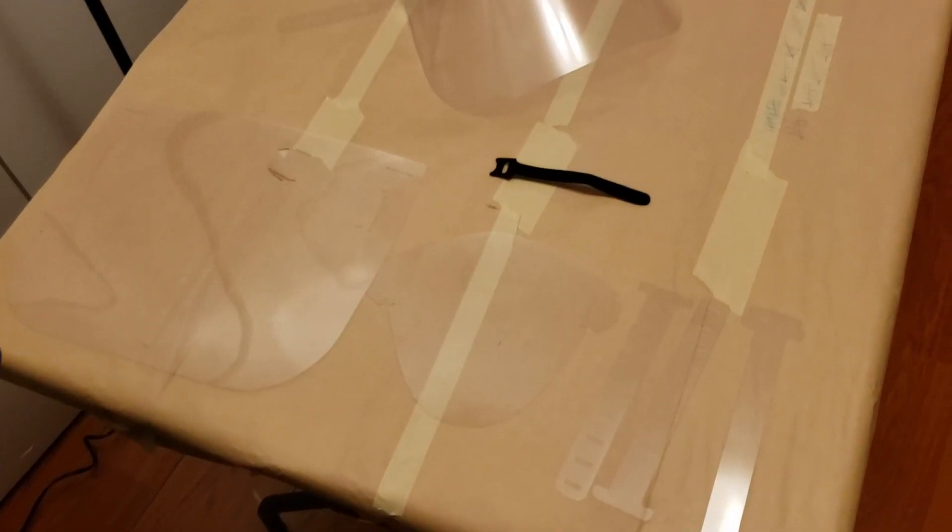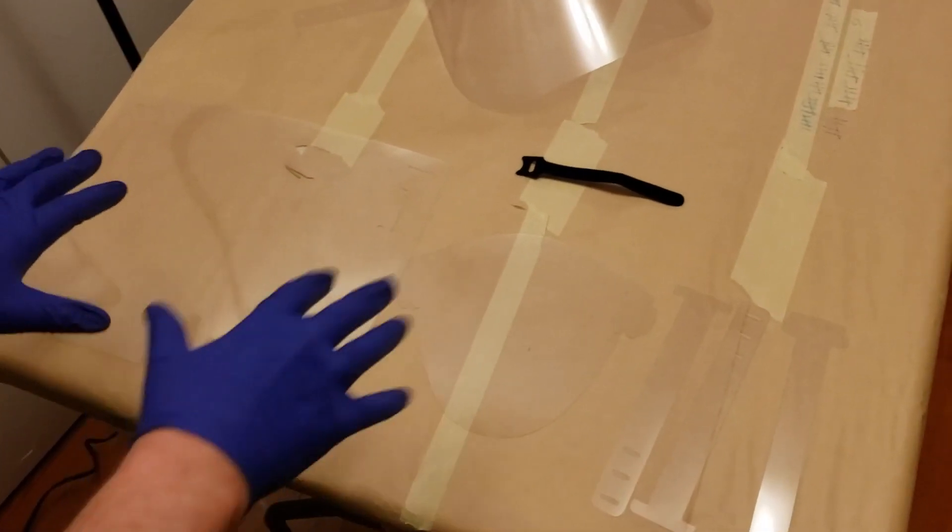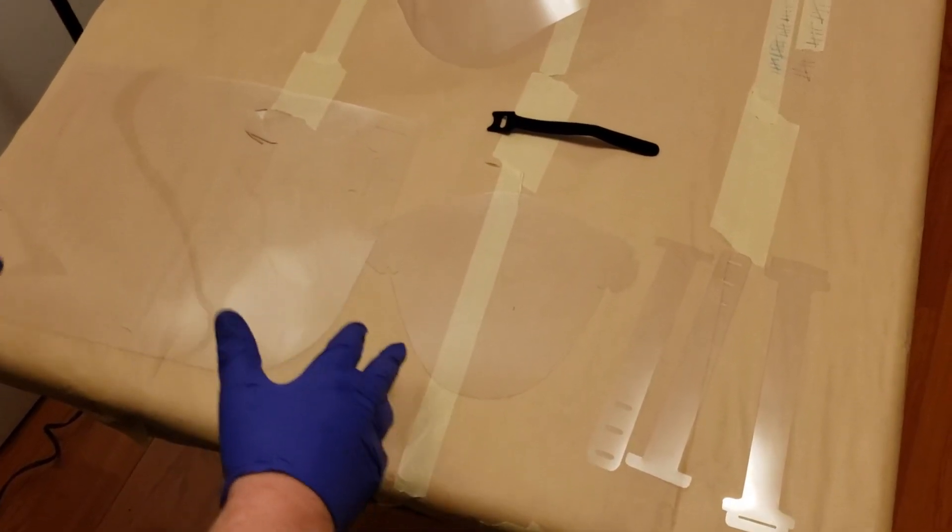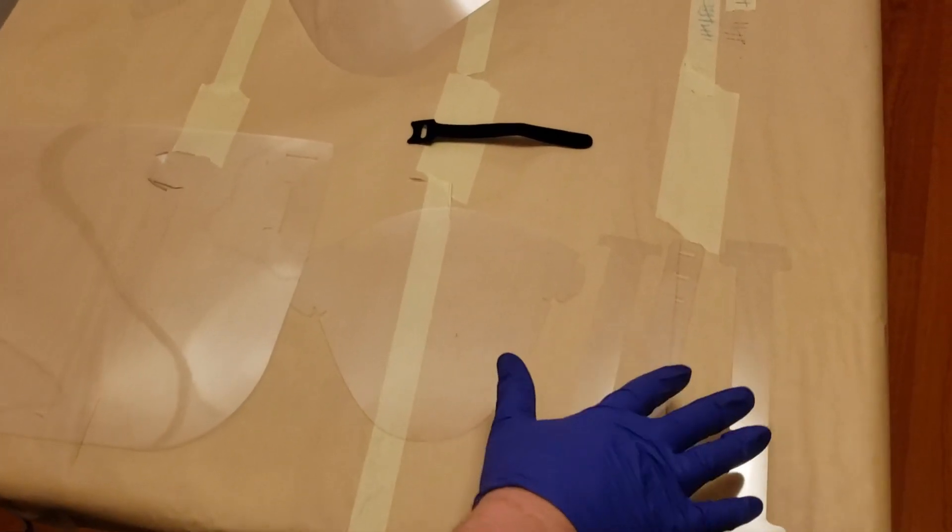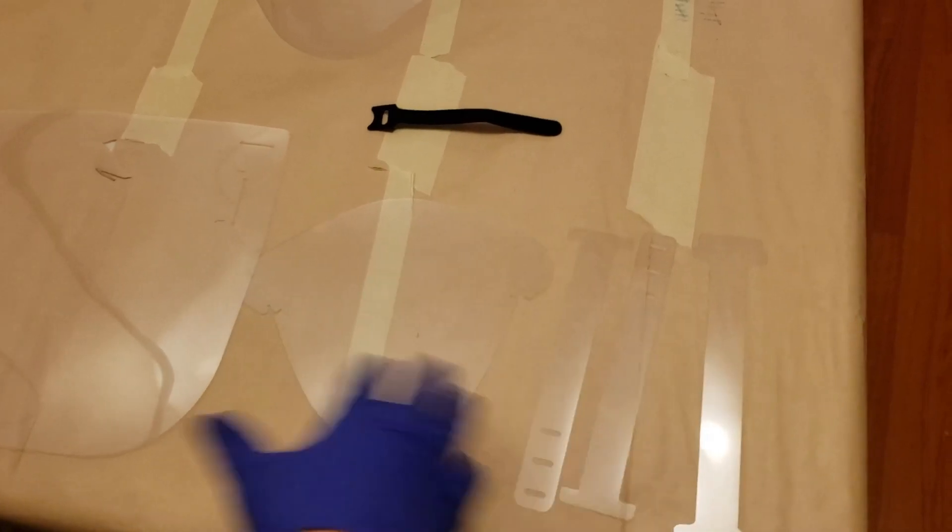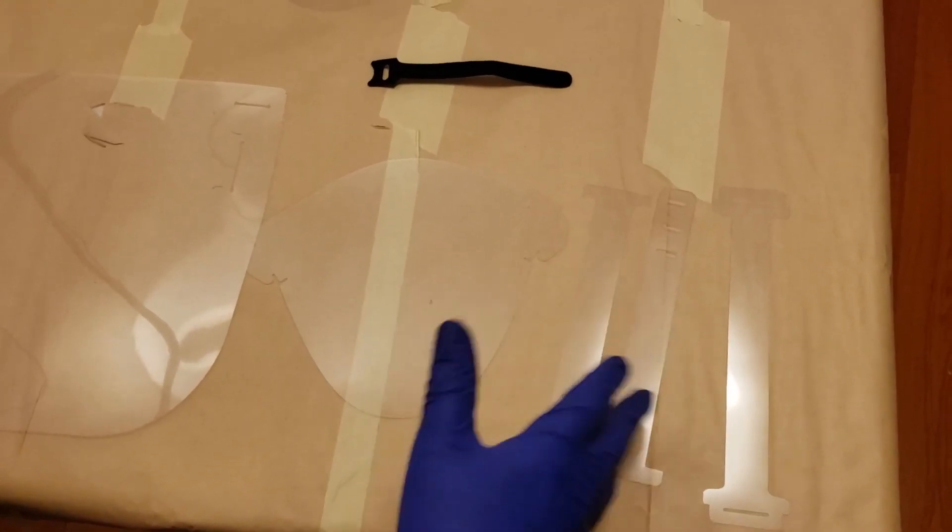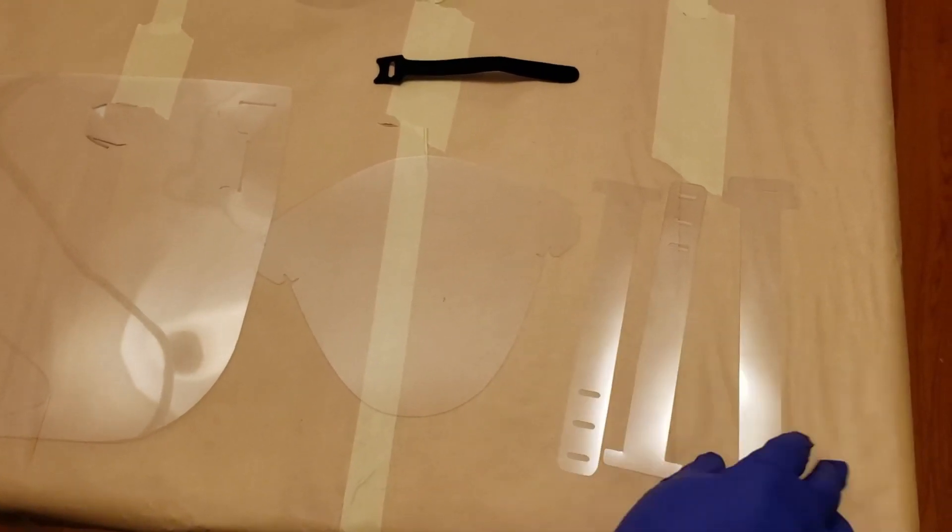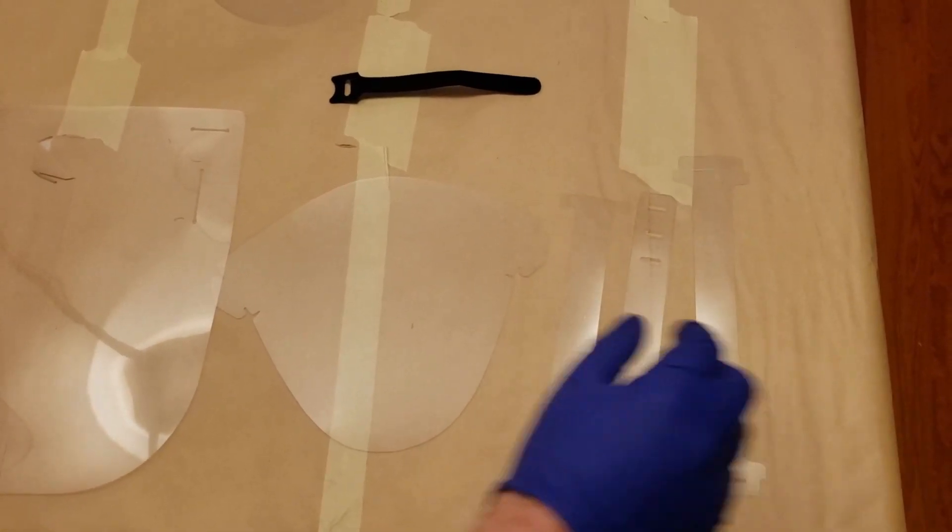So after you print out your pieces in your Cricut cutting machine, here's what we're going to need to make one shield. You may have a few extra head straps depending on the design, I've been changing it, but you can use those as spares. It's nice to have spares in case one gets contaminated or broken.